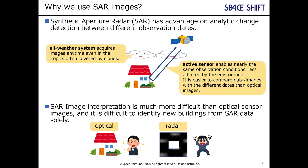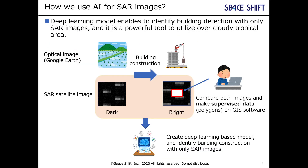SAR is a powerful tool for change detection between different observation dates. It is an all-weather system and an active sensor, so we can obtain images regularly, comparing images and detecting changes with image analysis. But SAR images have a big disadvantage — image interpretation is much more difficult than with optical sensor images. This is why we made research on SAR data and deep learning models.